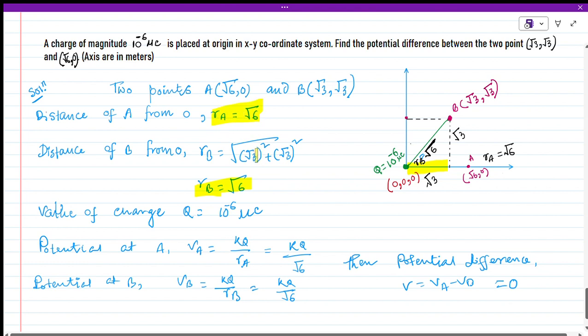The value of charge is given by Q = 10^-6 microcoulombs. We know that the potential at any point equals kQ/r, where k is Coulomb's constant.